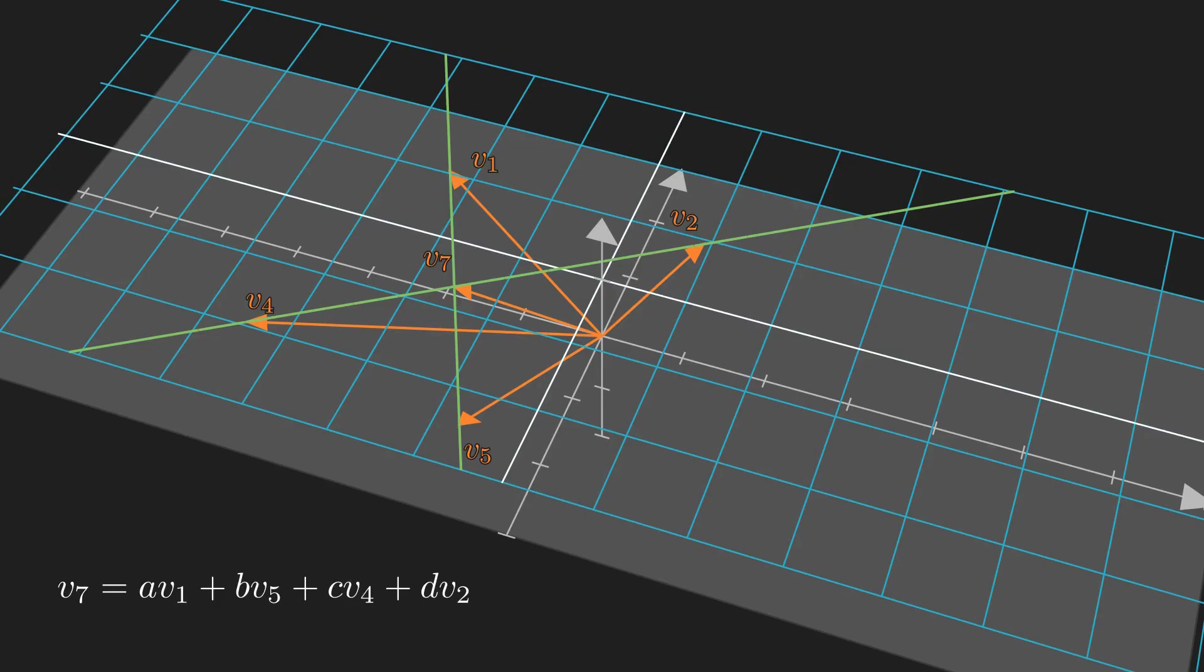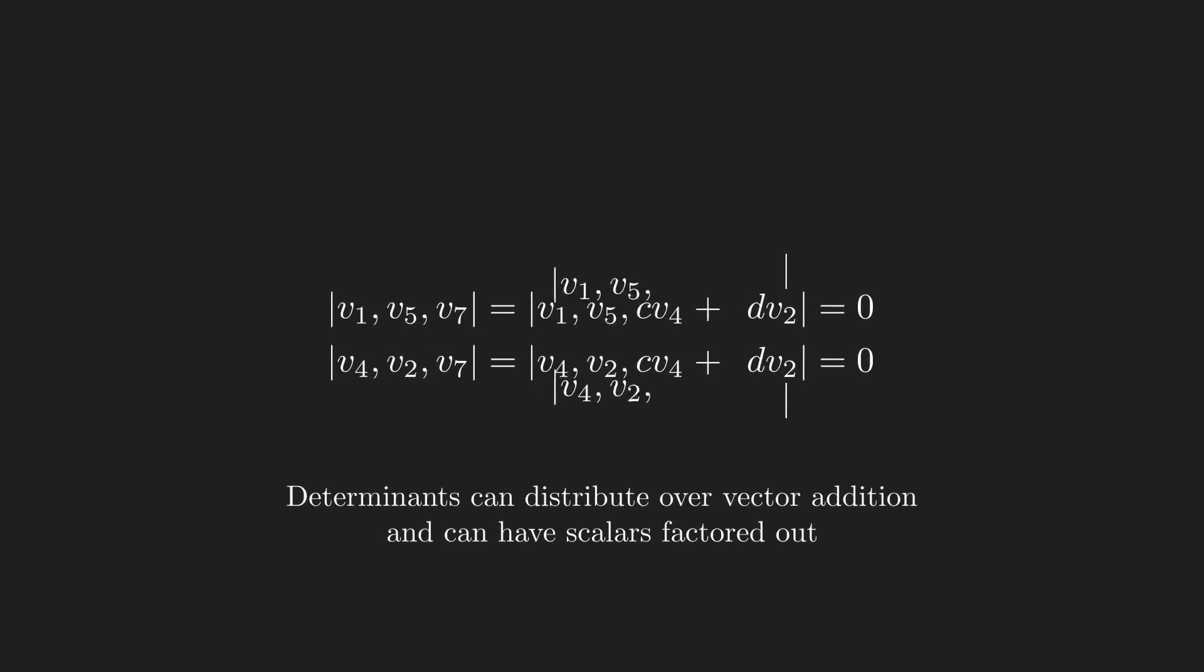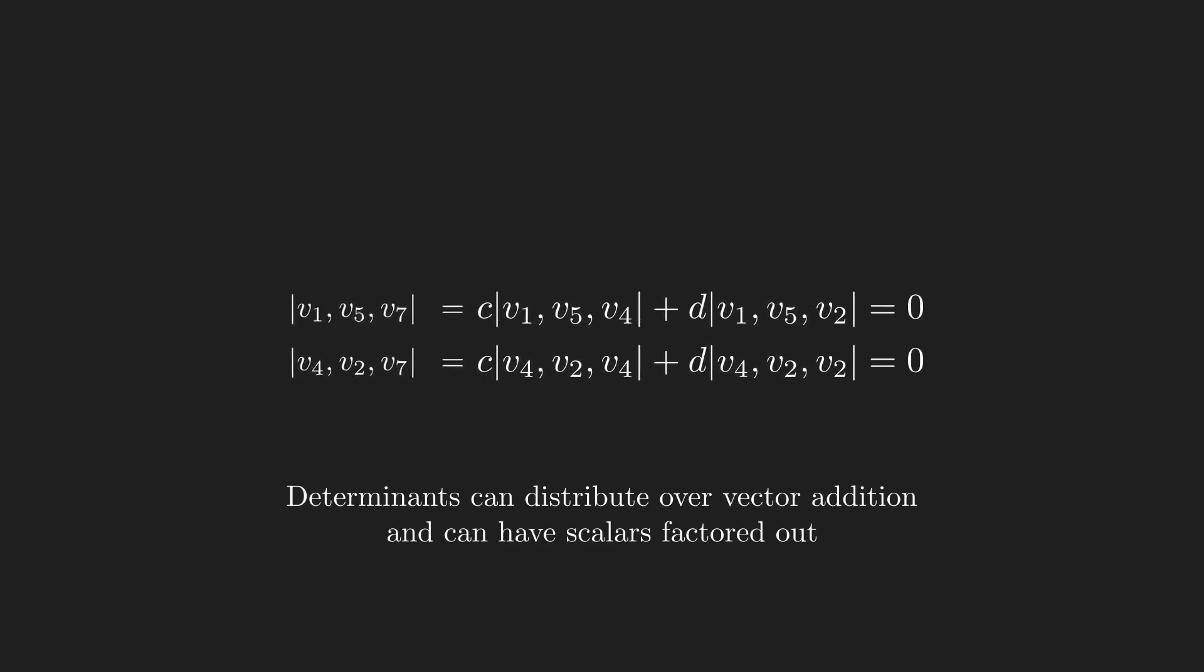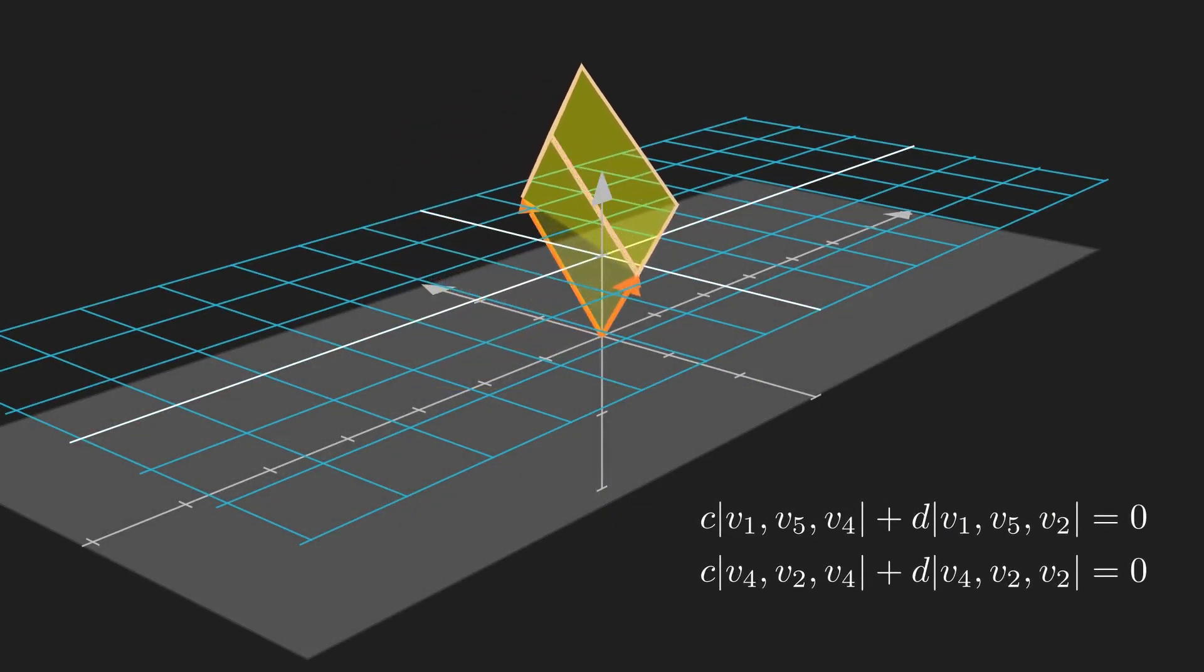Instead, I want to express vector 7 as a linear combination of these four vectors, as you'll see how that'll be helpful later. Since vector 7 is collinear with vectors 1 and 5, and vectors 4 and 2, vector 7 actually doesn't need to be a linear combination of all four vectors, but only of either vectors 1 and 5, or vectors 4 and 2. For convenience, I'll choose vectors 4 and 2. Then, I'll solve this into the two equations and simplify, using the properties that determinants can distribute over vector addition and can have scalars factored out. There are determinants that contain two of the same vectors. Visually, when two of three vectors equal each other, their volume, and thus determinant, equals 0. So the second equation can't be used to solve for C and D.